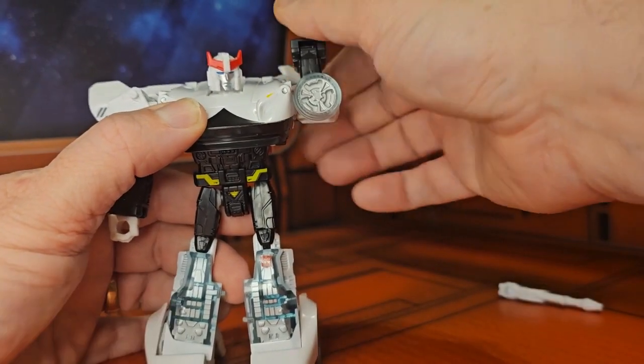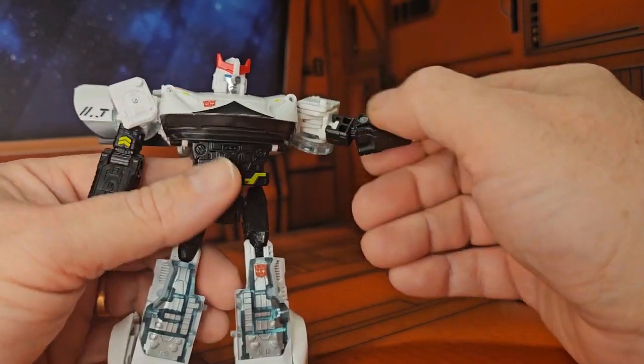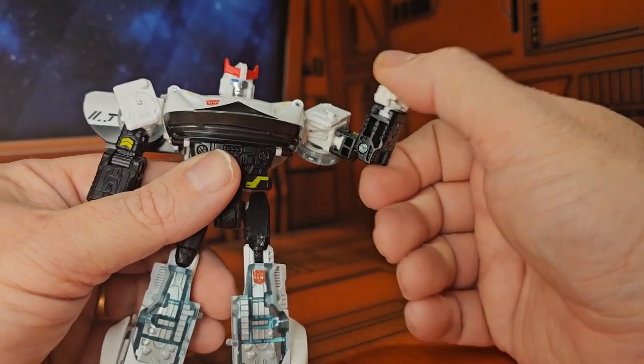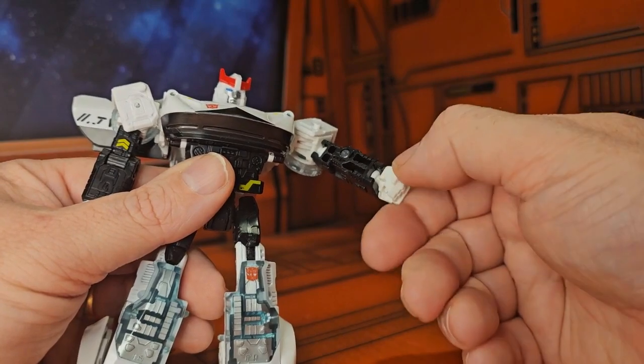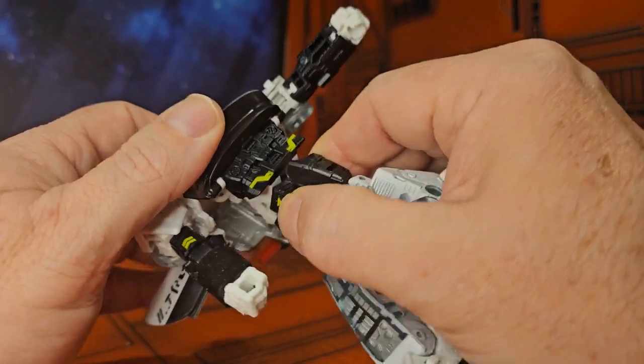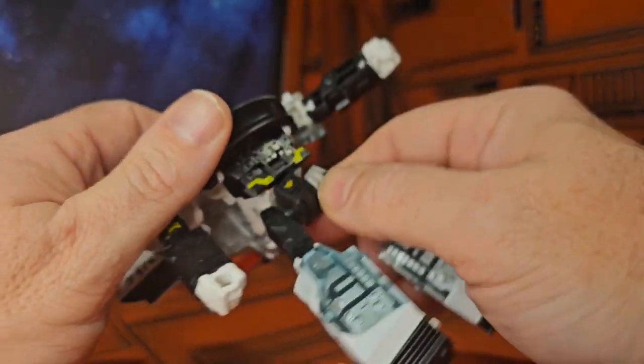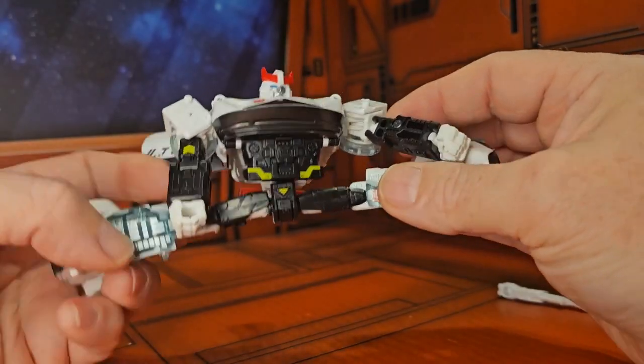For articulation, Prowl can move his arms up and down around. He has a bicep swivel, single bend in that arm, wrist that rotates around on a peg. As far as waist swivel goes, he has one right here at the hip. His legs can do a full split, move forward and back.